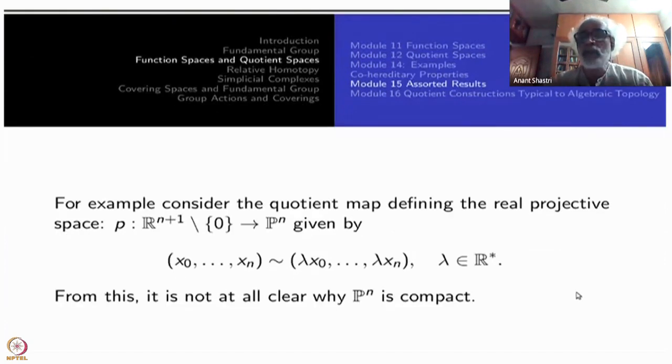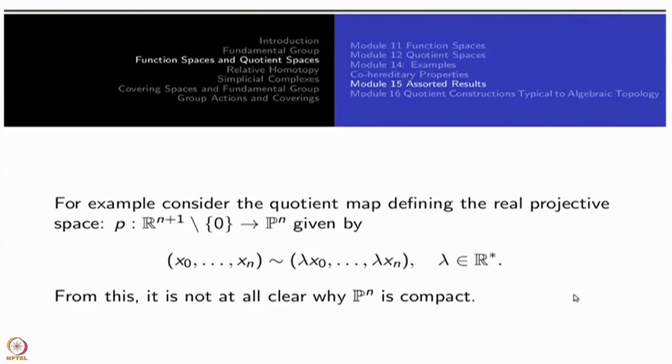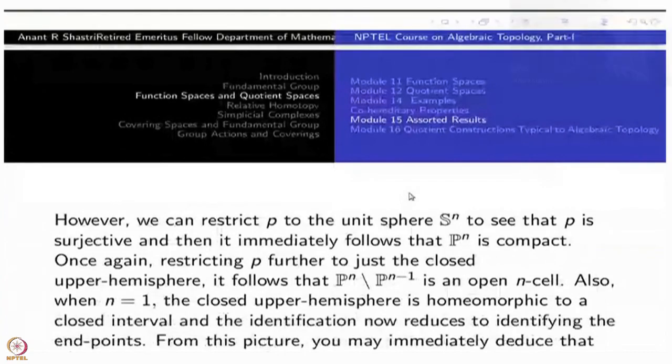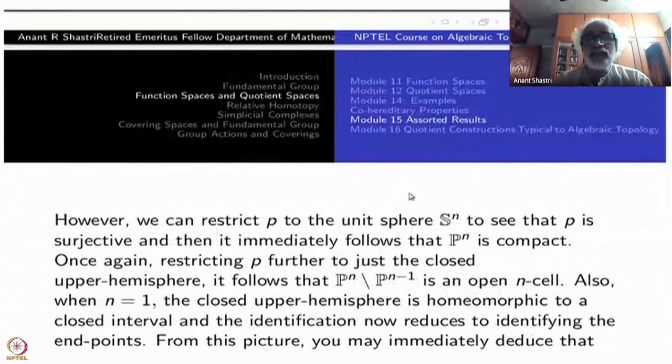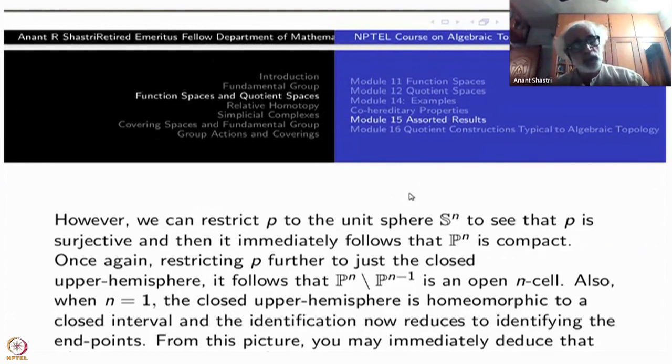It will be restricted to S^n will be also a quotient map. Why this is important? The first thing is that you immediately know that being quotient of S^n, P^n is compact.